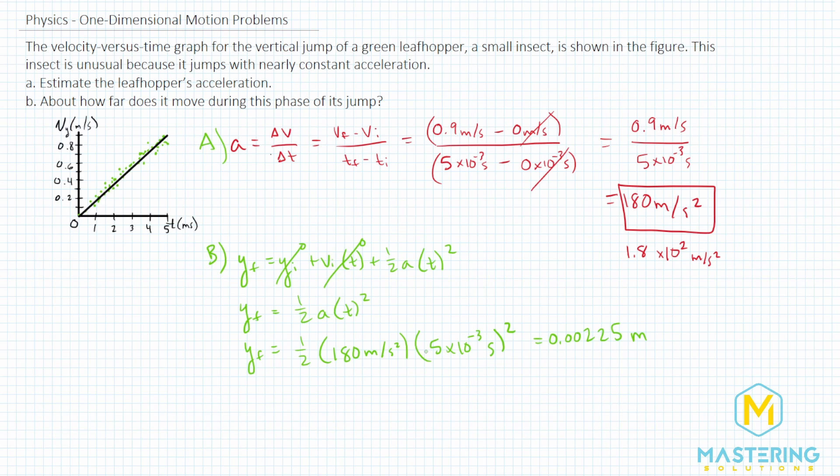Looking at the units as a double check, we have meters per second squared times seconds squared. So the seconds squared cancels, leaving us with meters over one, or in other words, meters.